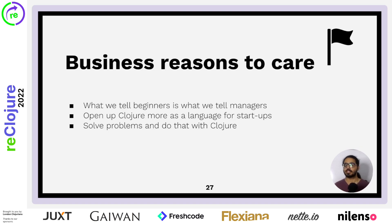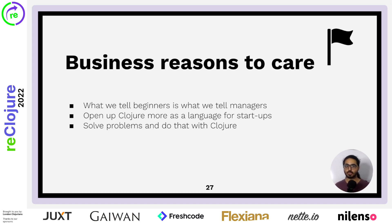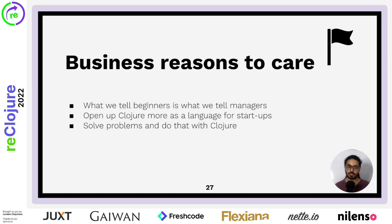Business reasons to care — time to get my business degree out. I think what we tell beginners is, in many ways, what we tell managers. For example, if you go to someone and tell them about Python and say, hey, Python is this easy language — you can pick it up in five minutes, be productive, everyone uses it — you can tell that to a manager and they probably agree, because that's what everyone is doing. So having a beginner case for Clojure can make it easier to have a business case. I really care about that because it opens up Clojure as a language for startups and for people to learn to implement their ideas. Because at the end of the day, what we want to do with programming languages is solve problems. I want to go to my manager and tell them, hey, I think Clojure can be really effective for our work — one, two, three — and get to use that, get to solve problems.